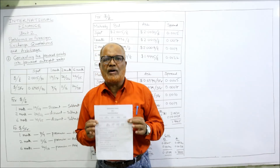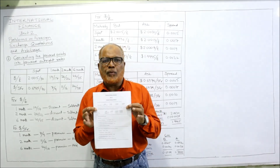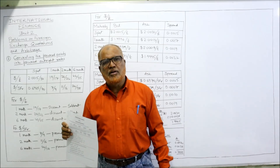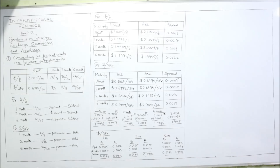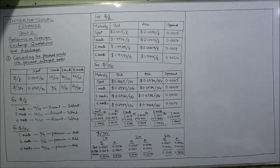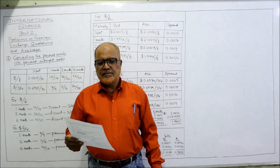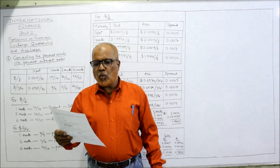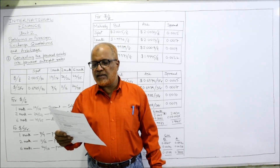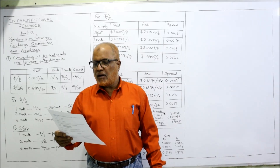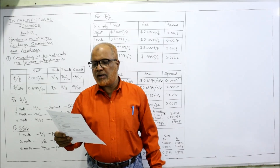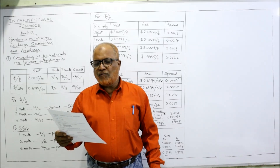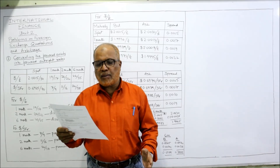Before starting the second problem, I expect my viewers to have a printout of the problems which I have given in the link under my description. Take a screenshot of the points and I'll explain every point. The second problem states: the following quotes are given for spot, one month, three month, and six months — convert these into outright rates and also calculate the corresponding spreads.